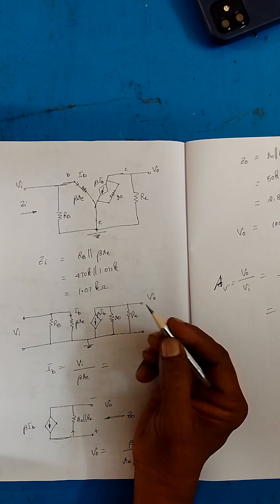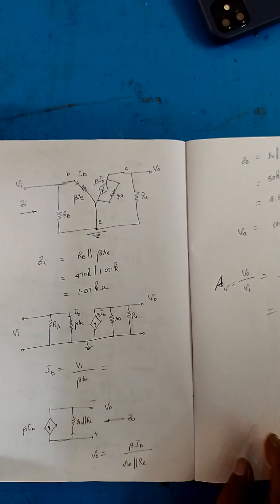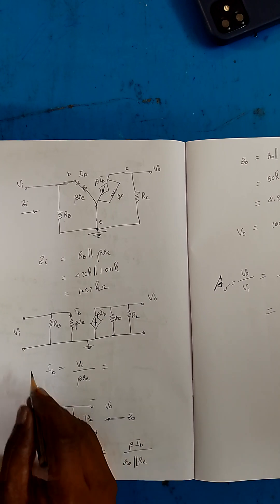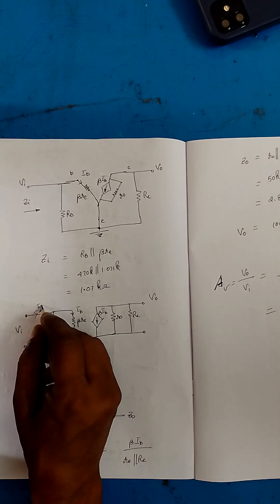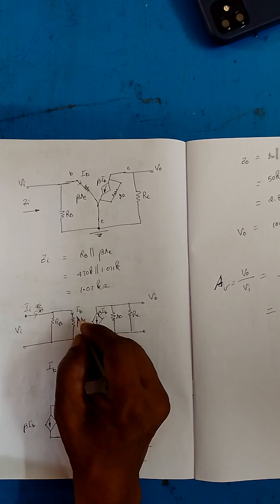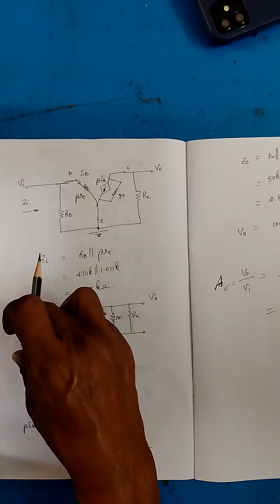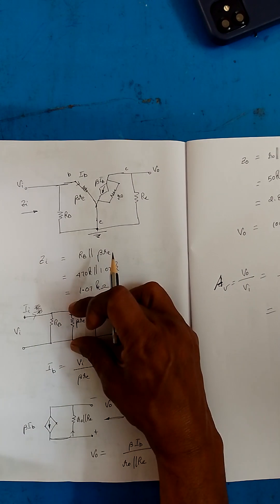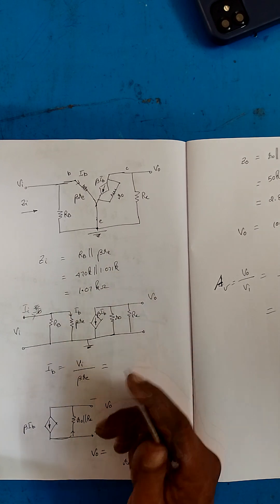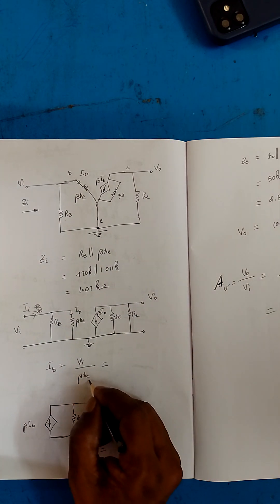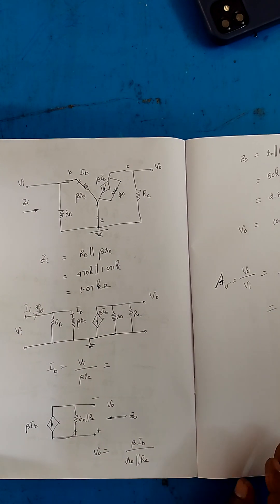So this circuit and that circuit both are same. Now from IB we need IB. IB is base current. Sorry, this is I in, input current, and this is base current. So V in is here. In parallel connection, voltage will be the same. So V in means here also V in. V in by beta re, you keep that answer as it is.